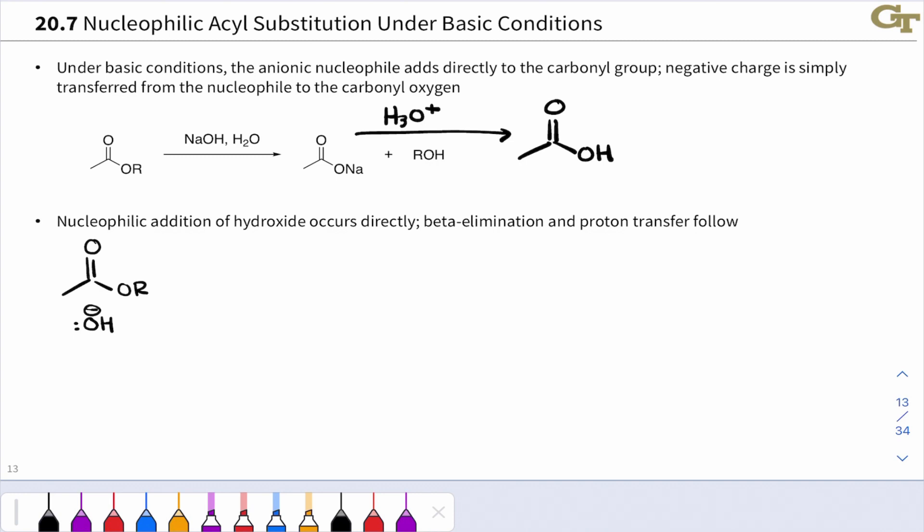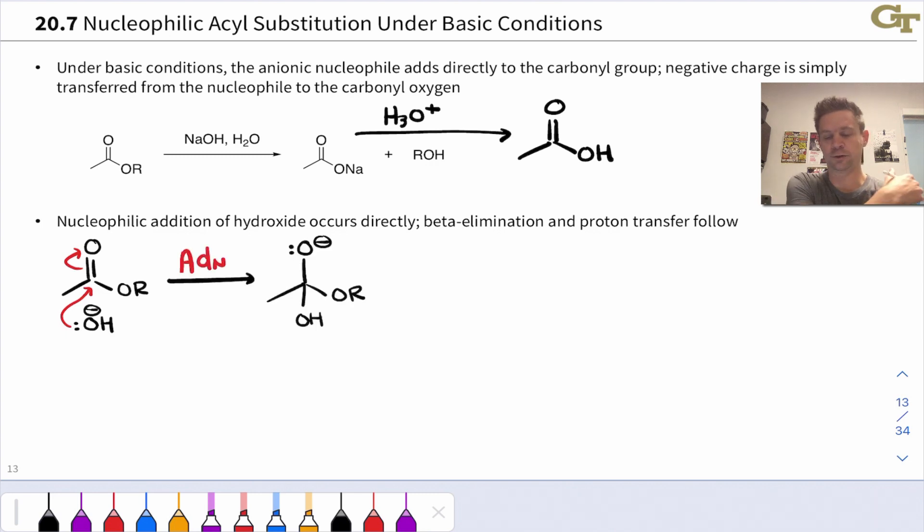because the hydroxide is a pretty good nucleophile in and of itself, hydroxide can add directly to the carbonyl carbon. And we've seen this in other contexts where base catalysis occurs. For example, base-catalyzed hydration of ketones and aldehydes, where hydroxide is used to catalyze the addition of water across a CO double bond in a ketone or aldehyde. Here, it's a similar thing going on. Hydroxide can add directly to the carbonyl carbon in an ADN step, and beta elimination of the alkoxide can occur to give the carboxylic acid.